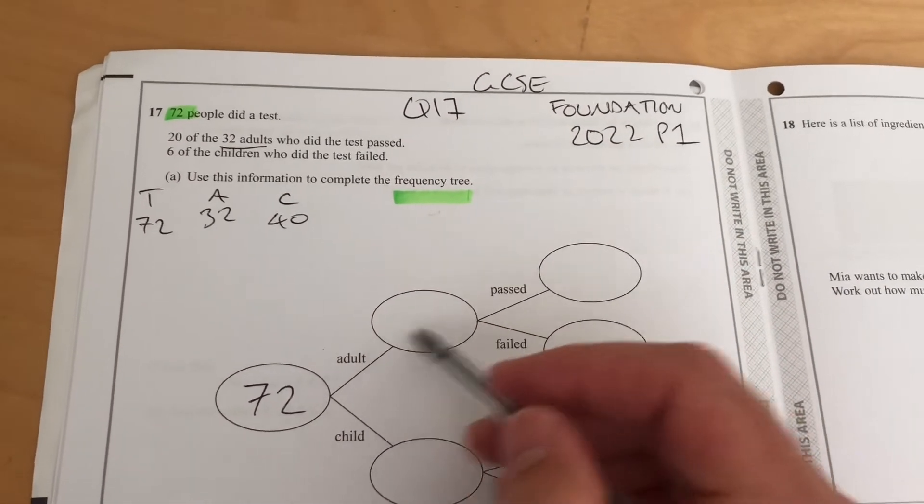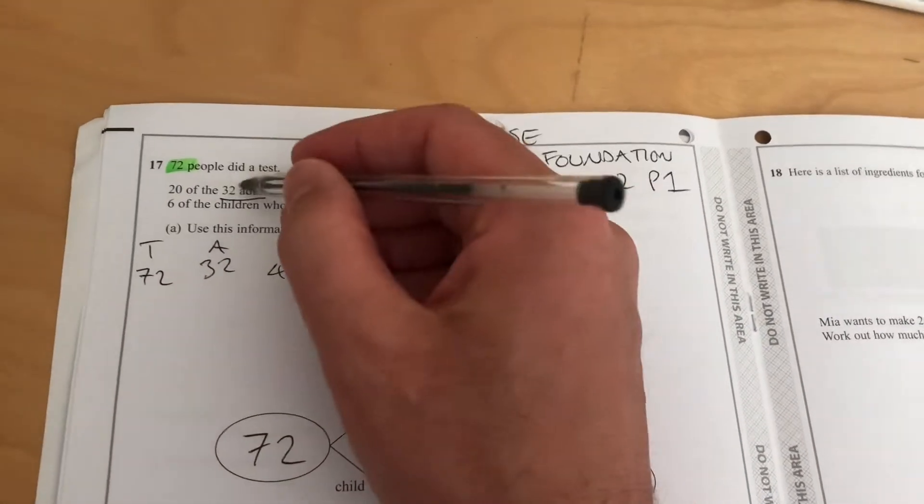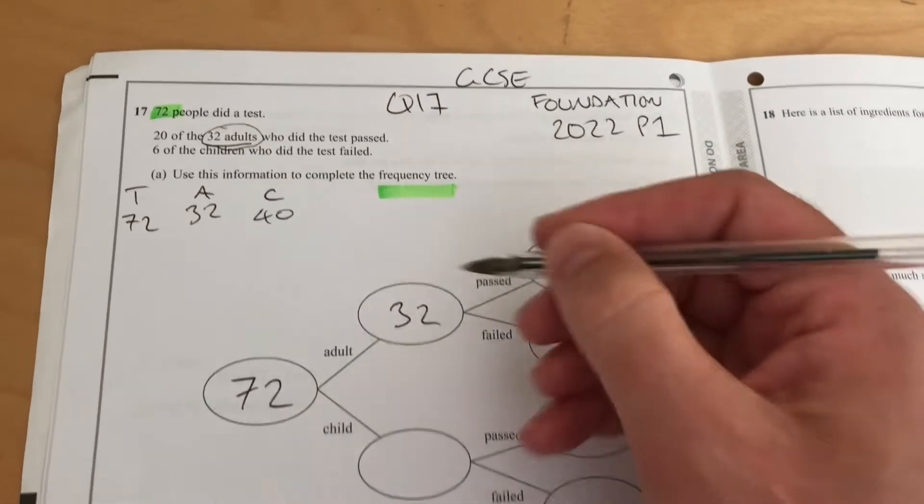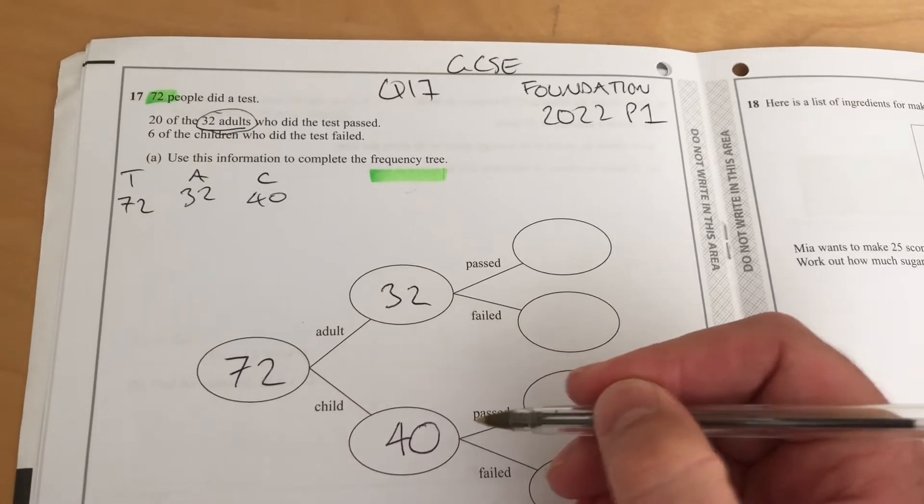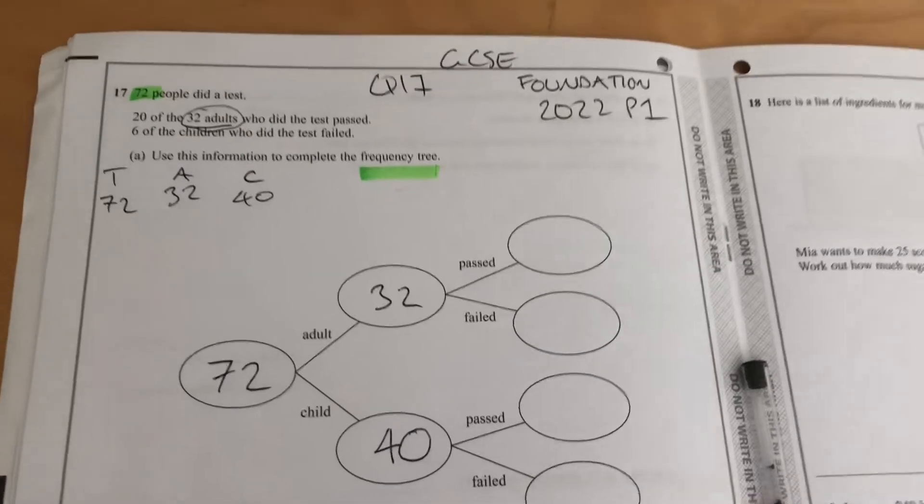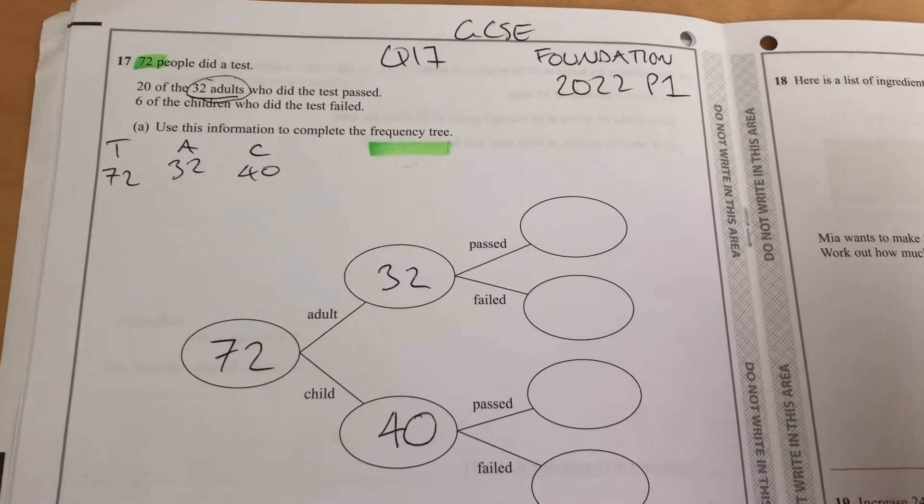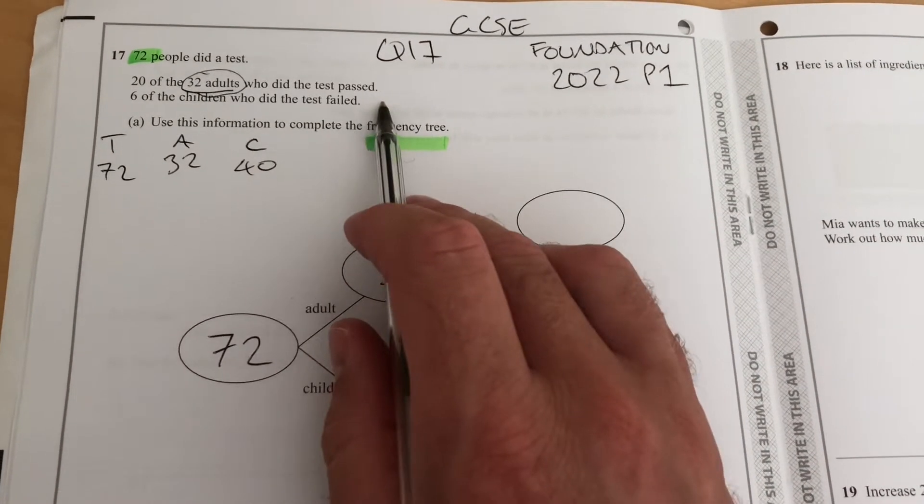Now I'm going to break that down into adult and child. It says 20 of the 32 adults, so that's the number of adults. Then the remainder must be children. Now, I'm not sure what the test is, but we're going to imagine it's something that both adults and children can take—so not a driving test.